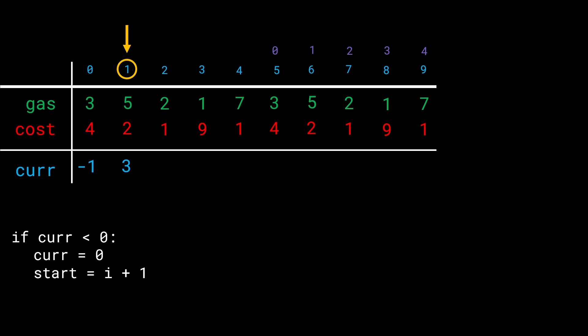At station 1, we start with an empty tank (current = 0). We fill 5 units, go to the next station costing 2, leaving us with 3 remaining. Then 3 + 2 - 1 = 4 at the station after that — still greater than zero. We still have 4 surplus units of gas.